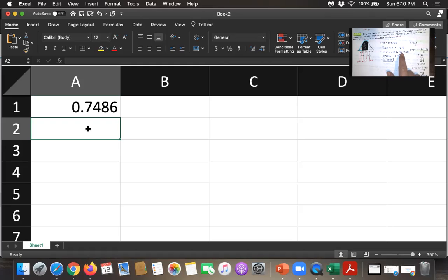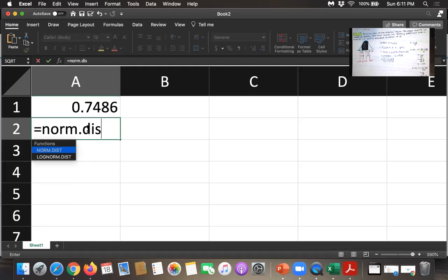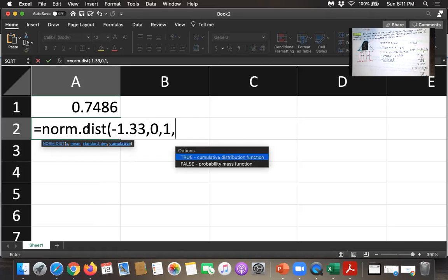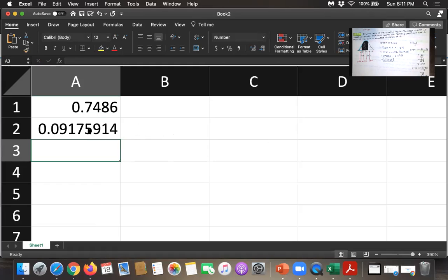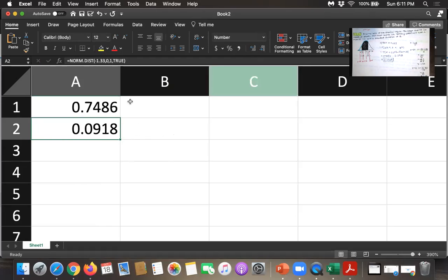Now I want to do the same thing with z equals negative 1.33. So I want the area to the left of z equals negative 1.33. So I type equals norm.dist, normal distribution. My z-score is negative 1.33. The mean for a standard normal distribution is 0. The standard deviation is 1. And we do want area to the left, so we'll say true. And we get this value. And so when we round to four decimal places, we get the same value that we had in our table there.